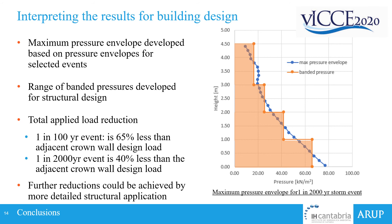To further simplify the application of this load for the building design, we developed a maximum pressure envelope per storm event or sea state, based on the pressure envelopes calculated for each of the selected events. What you can see on the right is an example of this maximum pressure envelope for the 1-in-2000-year storm event and the subsequent range of banded pressures developed per metre of structure height, which allowed for a more accurate assessment of the building reinforcement and a reduction in the load applied at the top of the building.